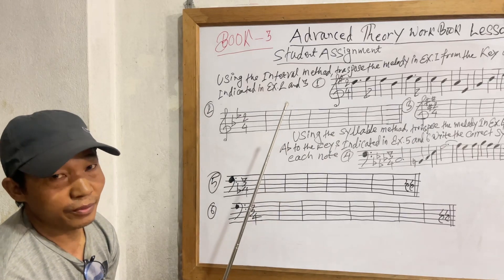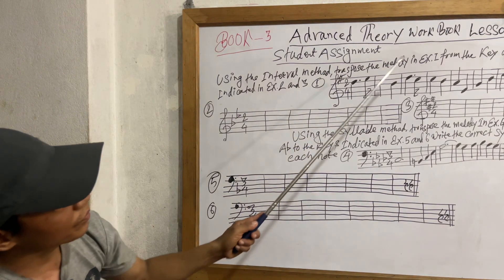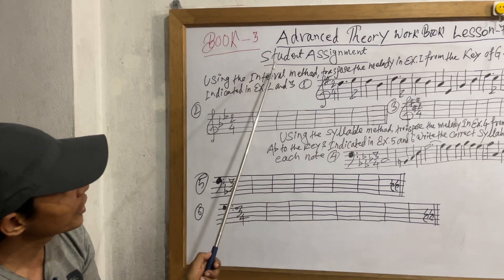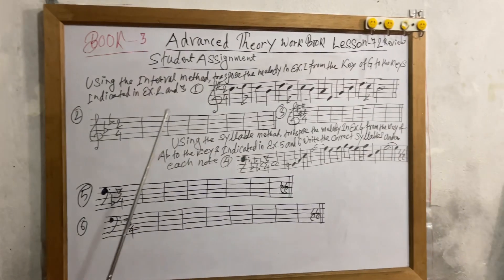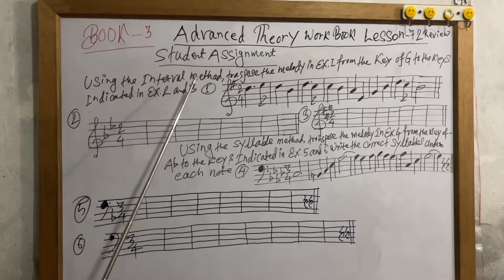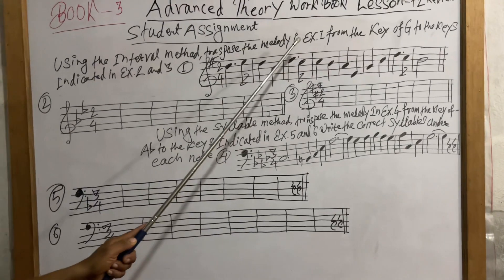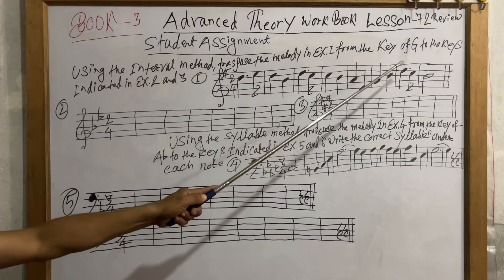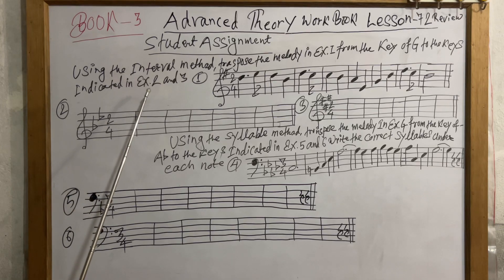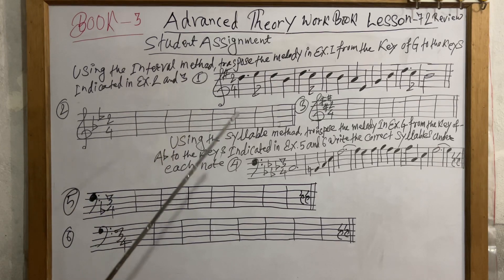Adlai lesson 72 review book student assignment: using the interval method, transpose the melody in exercise one from the key of G to the key indicated in exercises two and three.